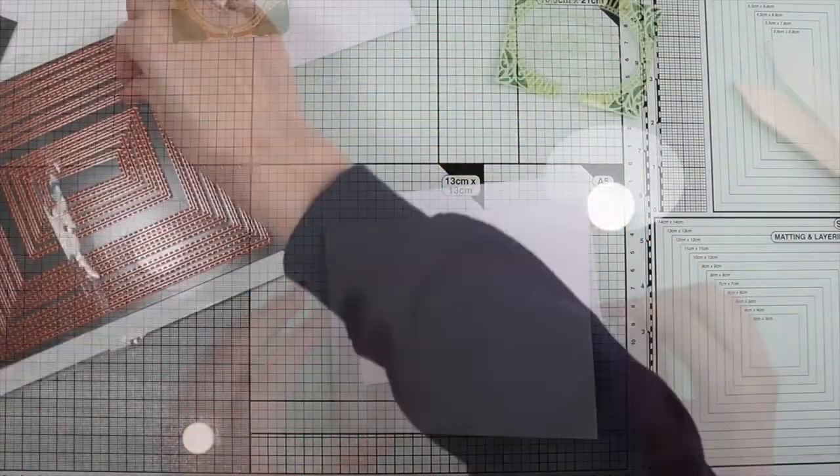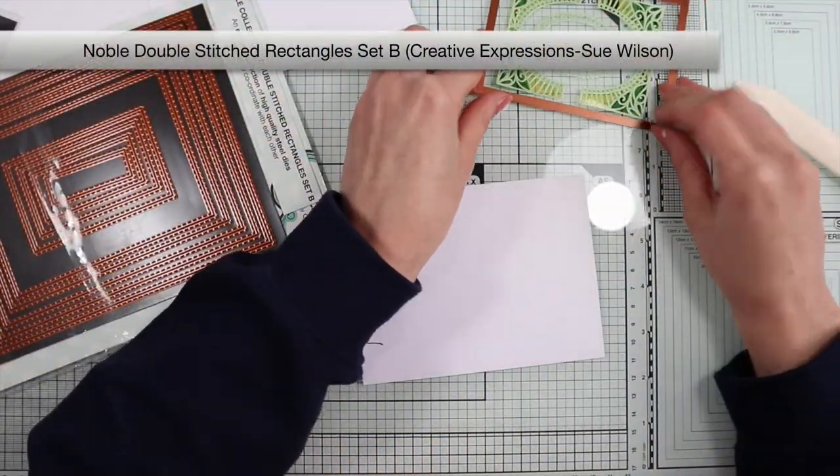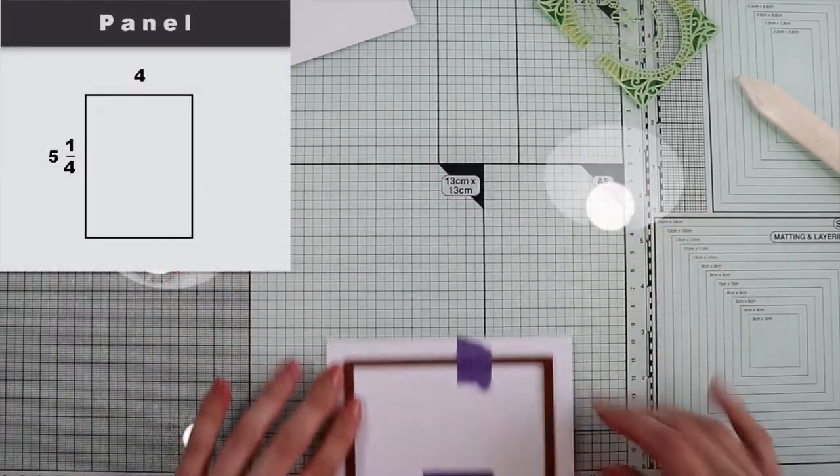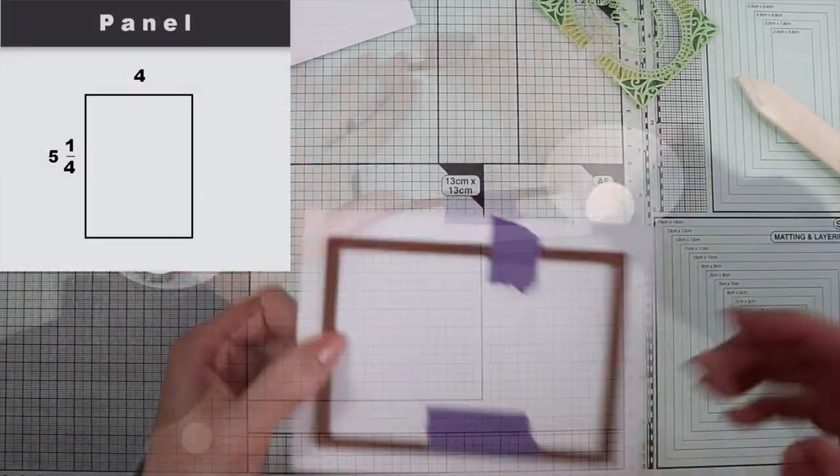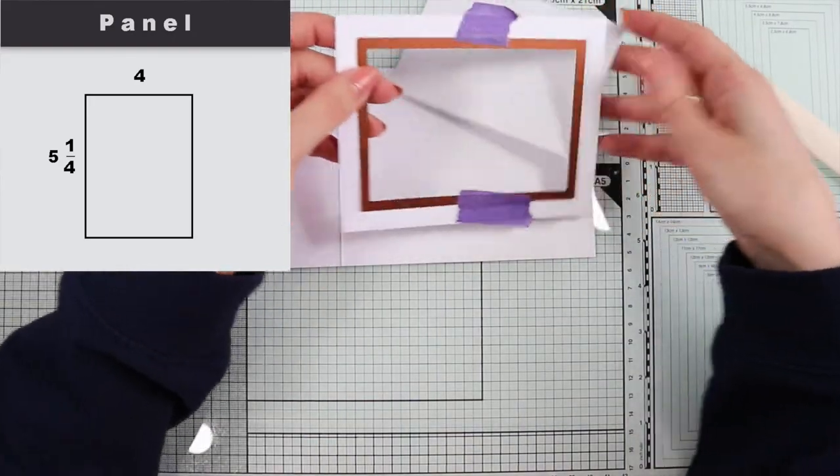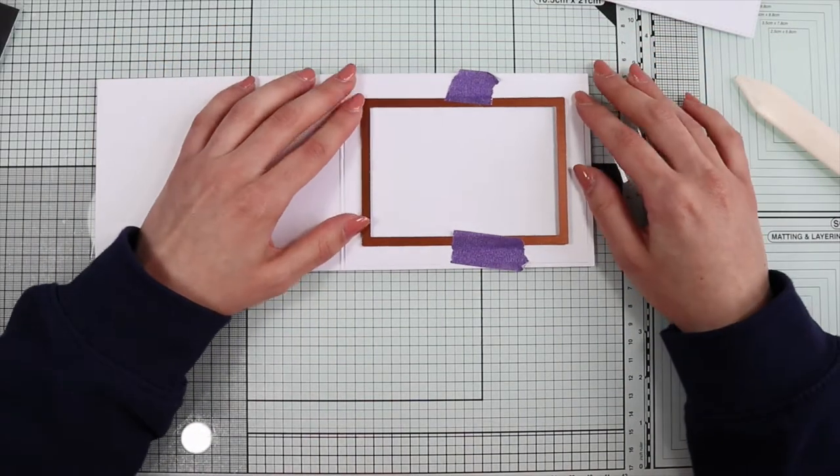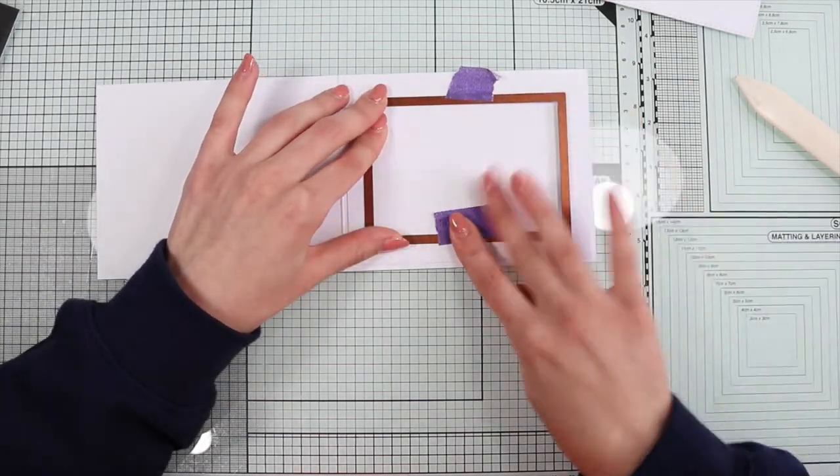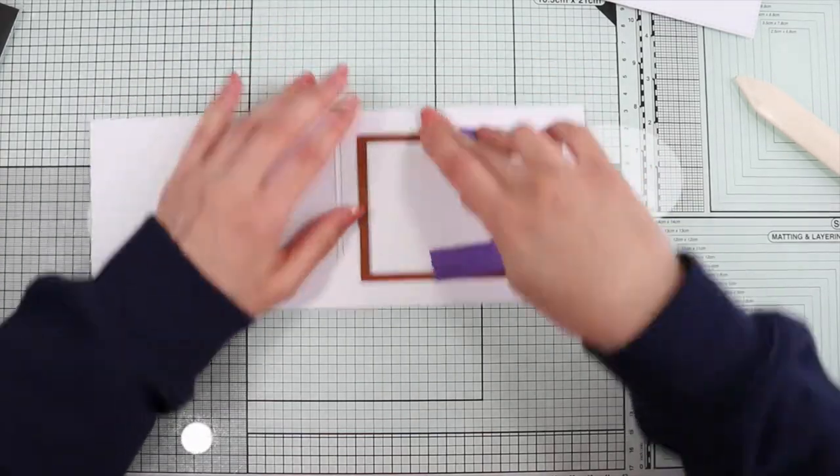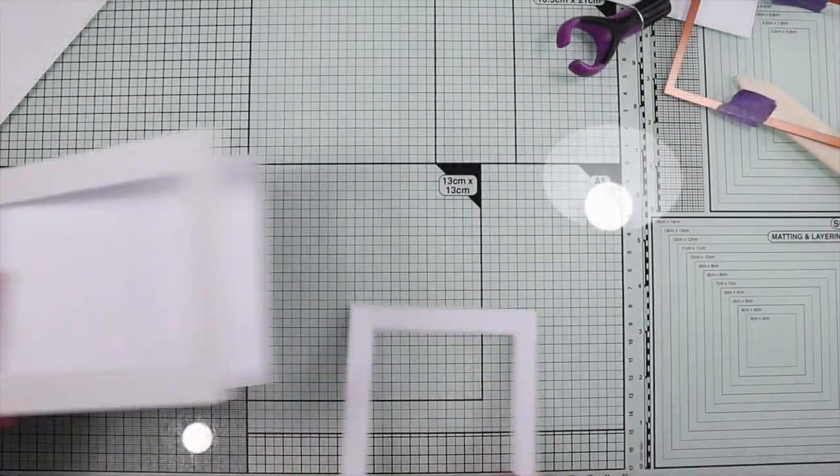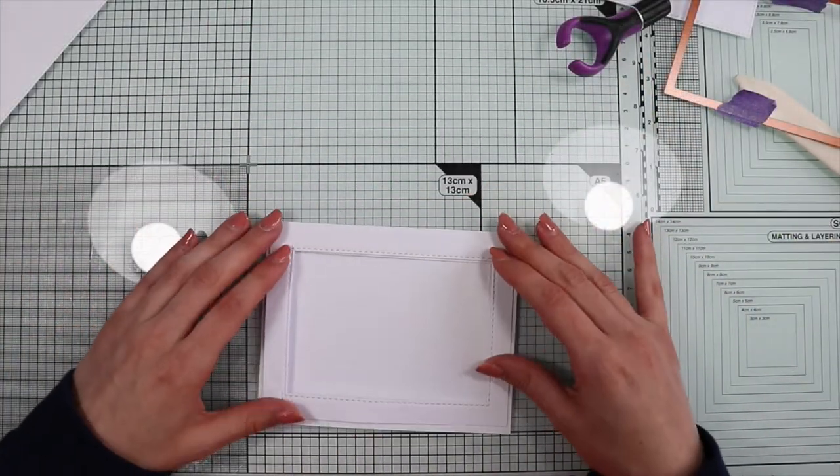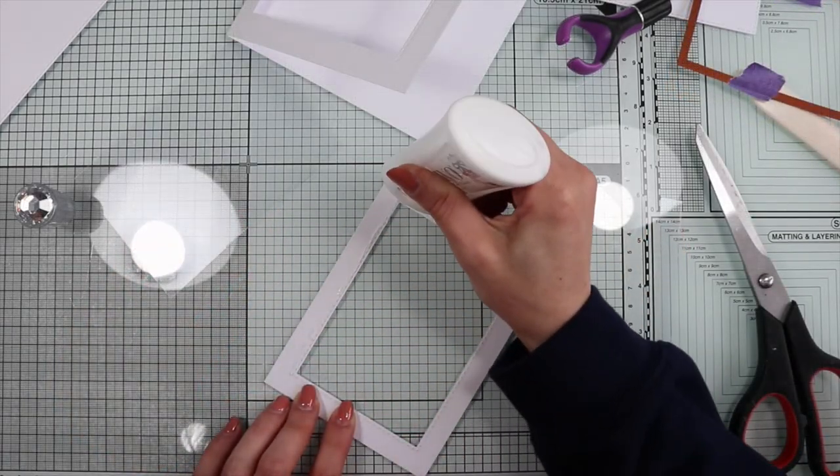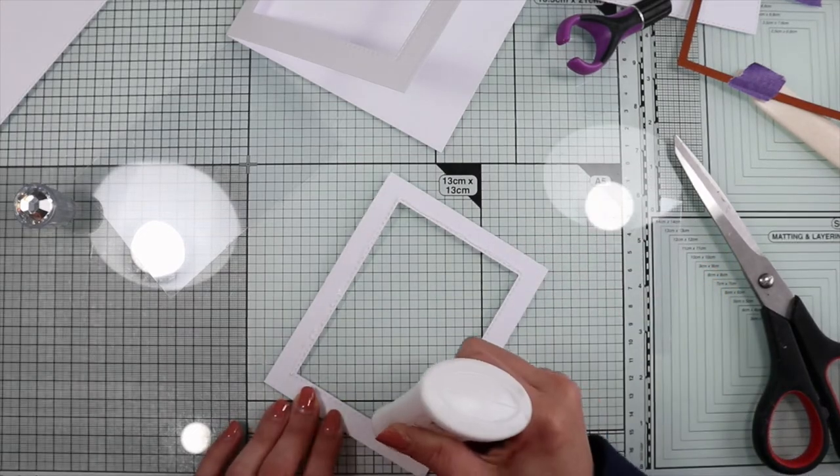Now I'm going to create a frame for the front of the card by die cutting a four by five and a quarter inches white cardstock. Then without moving the die I place the frame on the front of the card base and I'm going to die cut it, obtaining a window that will allow you to see the inside of the card. On the back of the frame I glue the embossed acetate.